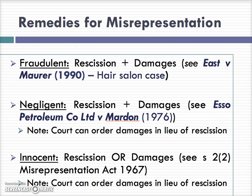An authority for that is East v Maurer — the hair salon case. Maurer was selling his hair salon to East and told East that he had no intention of setting up a new hair salon. This was untrue, and he knew it to be untrue — it was a fraudulent misrepresentation. East was able to recover not only for the actual loss but also for consequential loss. Where negligent misrepresentation is concerned, again both rescission and damages are available.